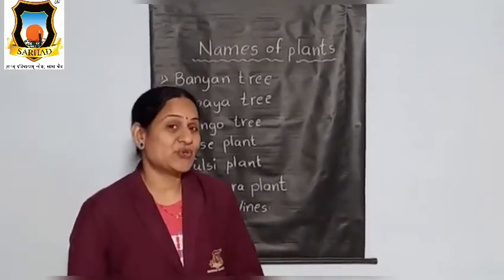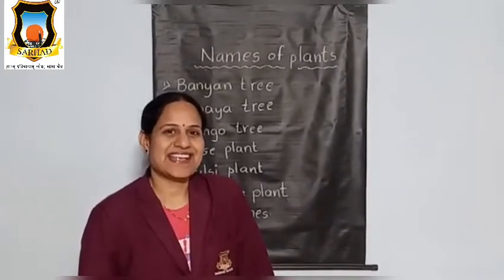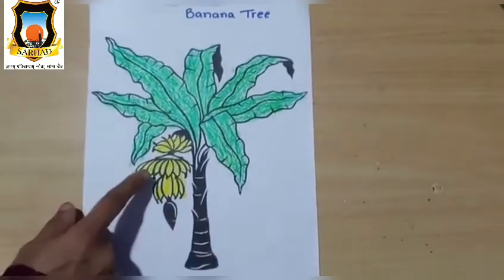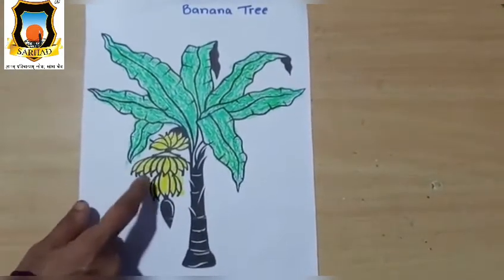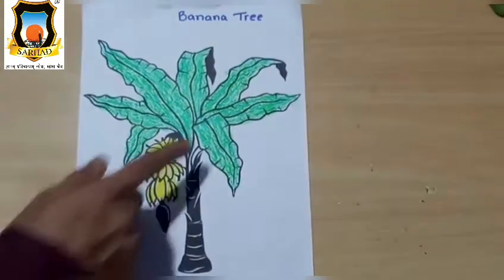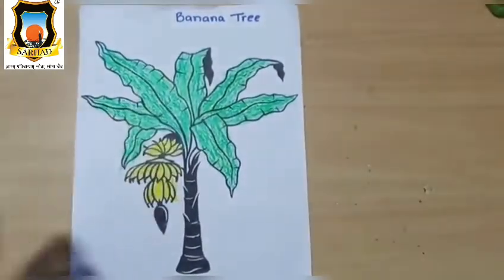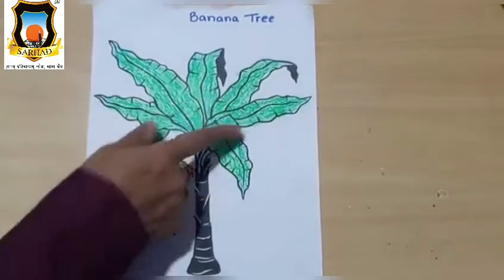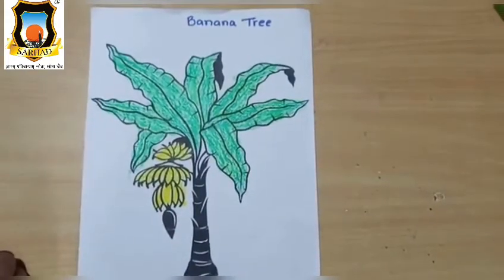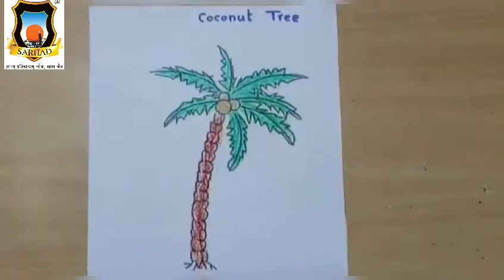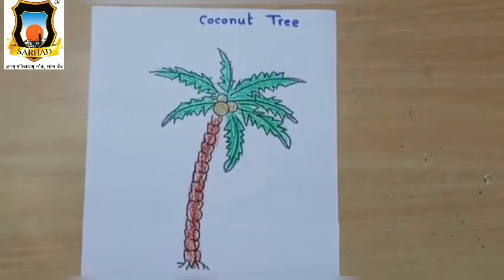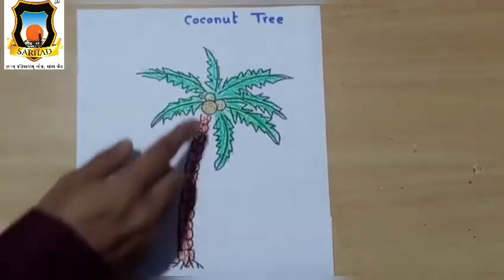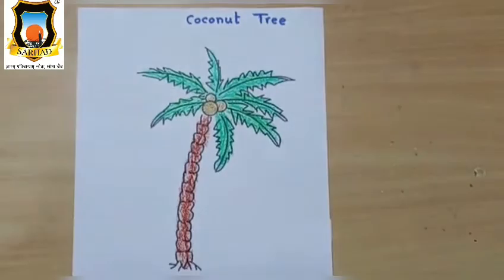Now I will show you some pictures of trees. See this picture — tell me what is this? Yes, these are bananas, so this tree is banana tree. What do you see on this tree? Banana. So the name of this tree is banana tree. Now see this picture — can anyone tell me which tree it is? This is coconut tree. Coconuts are there, so this is called coconut tree.